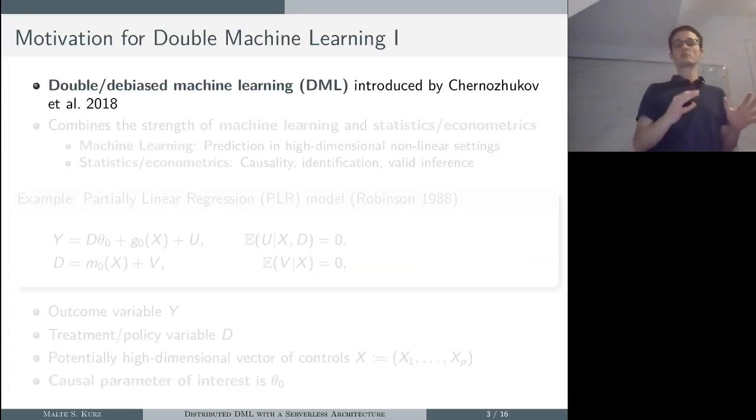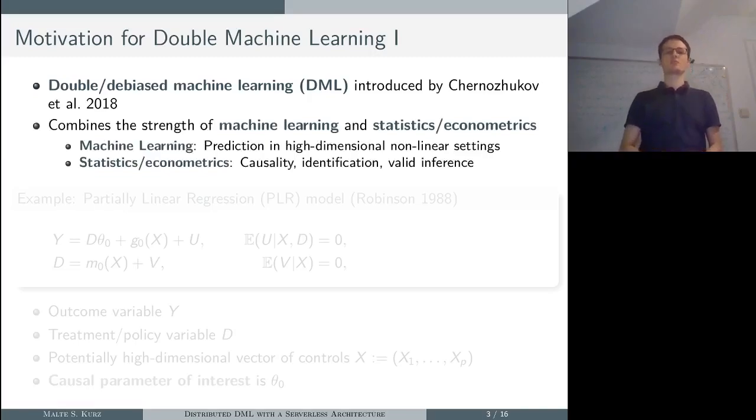The double machine learning framework was introduced by Viktor Chernozhukov and co-authors in 2018, and it basically combines the strength of machine learning and statistics. Machine learning is used to get high quality predictions in high dimensional and non-linear settings, and from statistics we use causal inference and the ability to get valid inference.